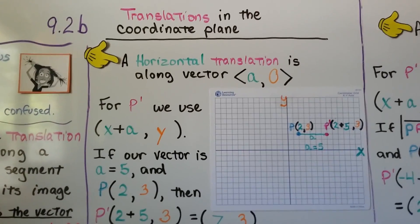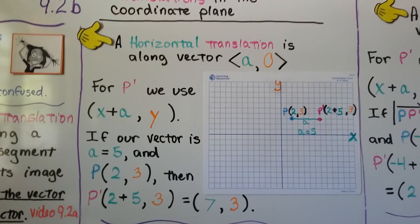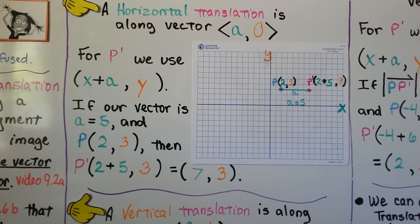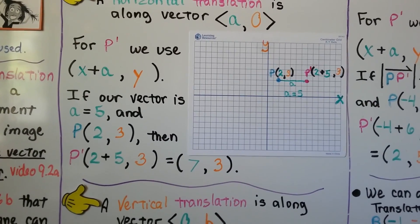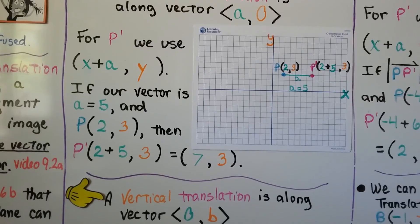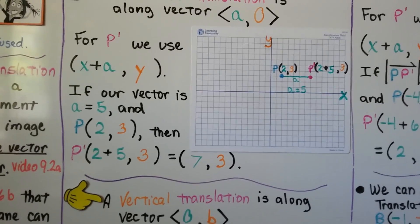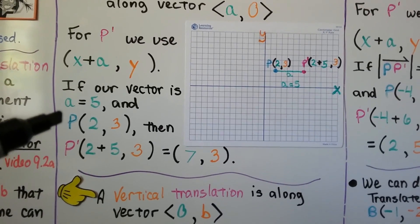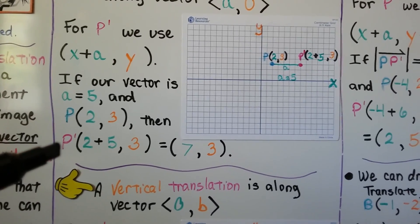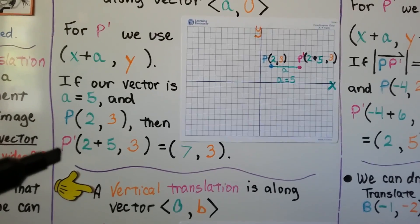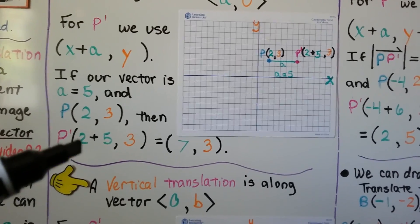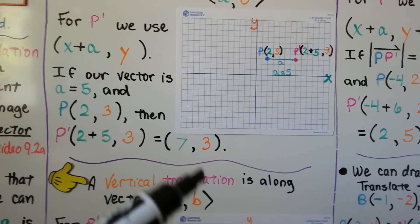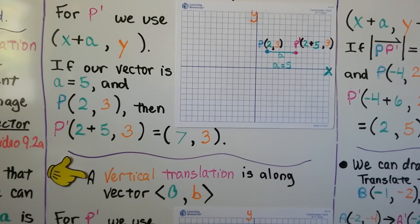For P prime, we use (x + a, y). If our vector is <5, 0>, then a equals 5. For our pre-image P at (2, 3), P prime is going to be at (2 + 5, 3), which is (7, 3).